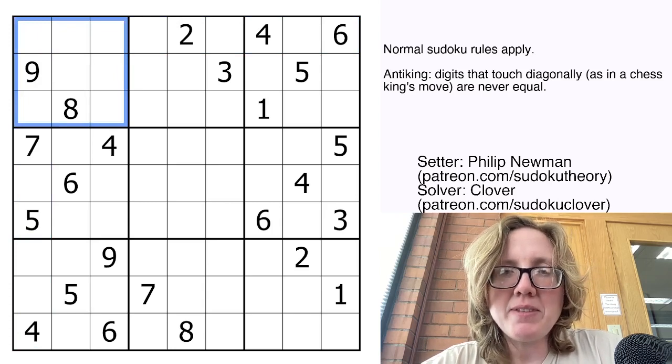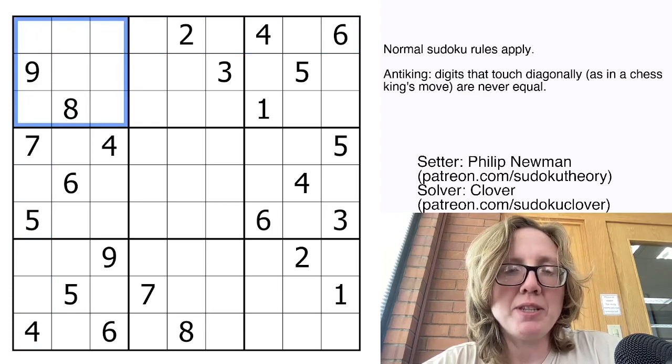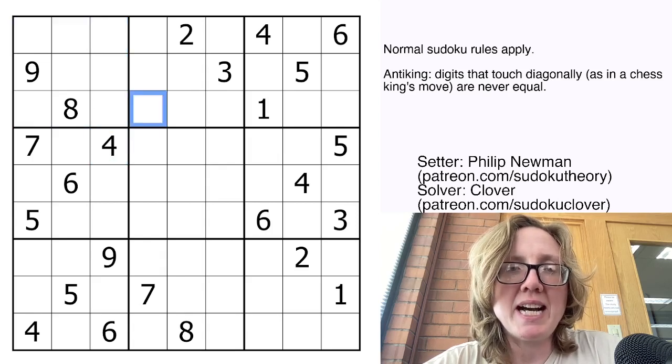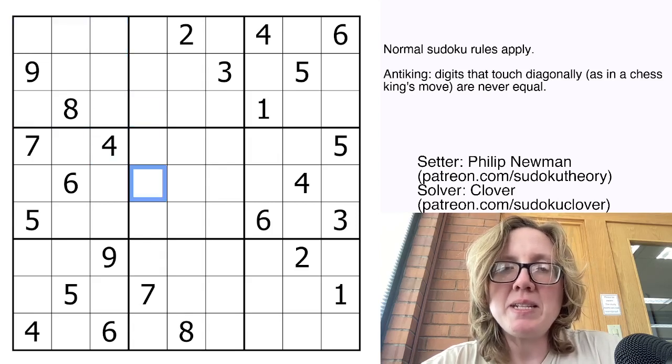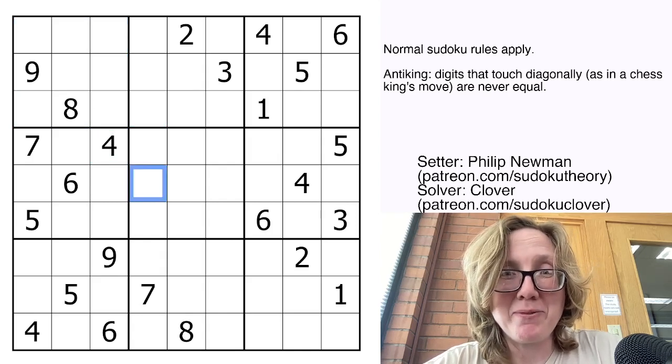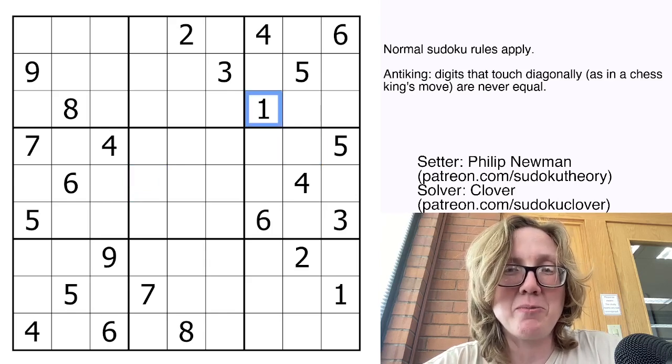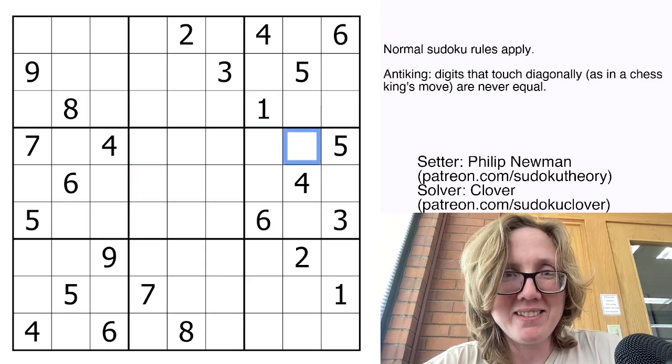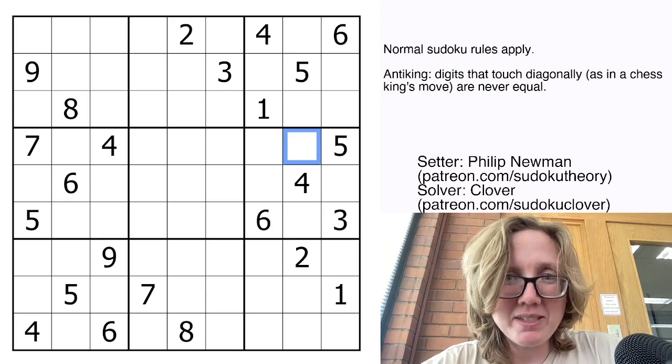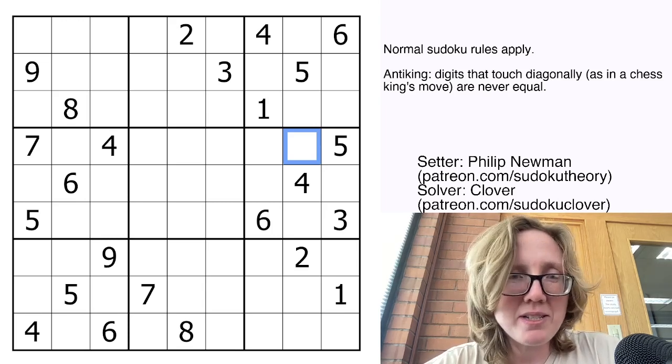On top of that we have an anti-king rule, also called no touch, and what that means is that digits that touch each other in the grid diagonally can never be equal. So I would not be allowed to put a 1 in this cell because there's a 1 here that would be touching it diagonally. That's it, relatively easy to describe ruleset today, so let's go ahead and solve the puzzle.